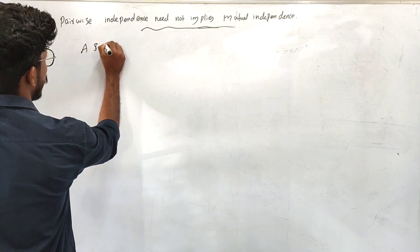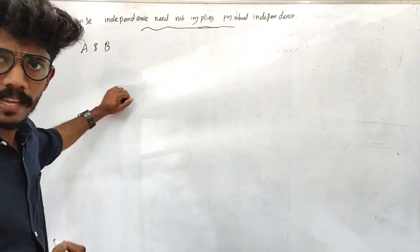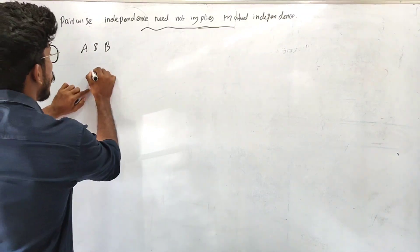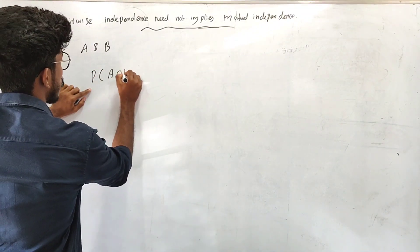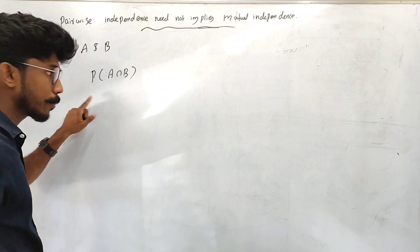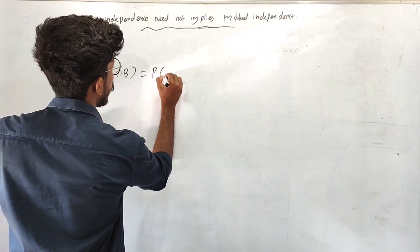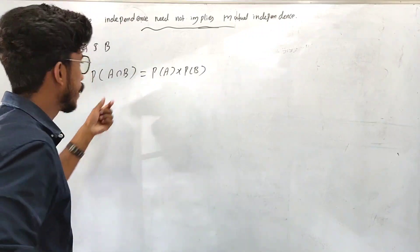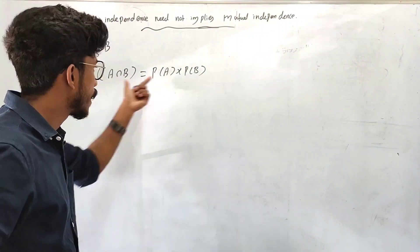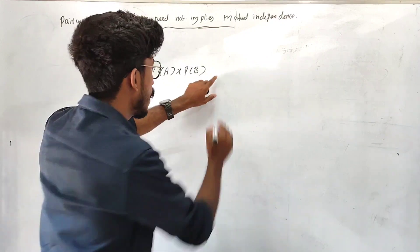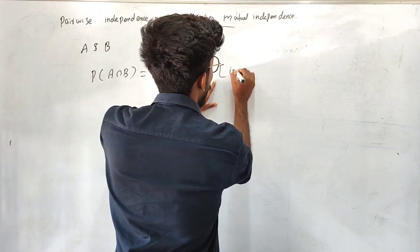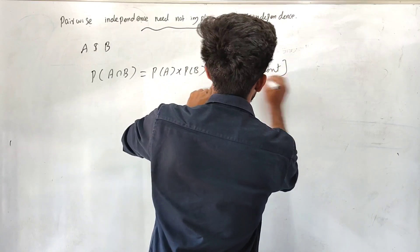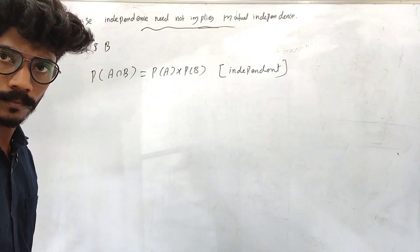Consider two events A and B. If these two events are independent, then the probability of A intersection B is equal to the probability of A multiplied by the probability of B. We can say that A and B are independent.